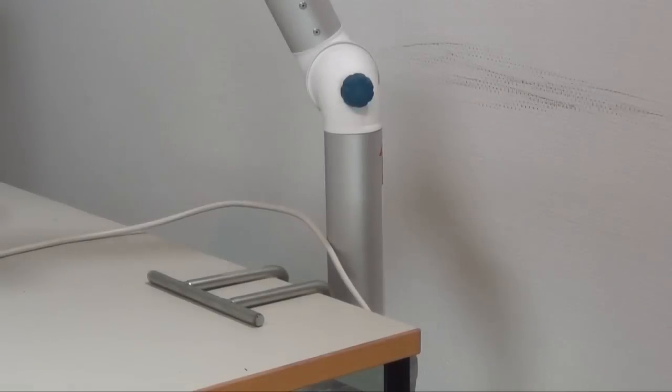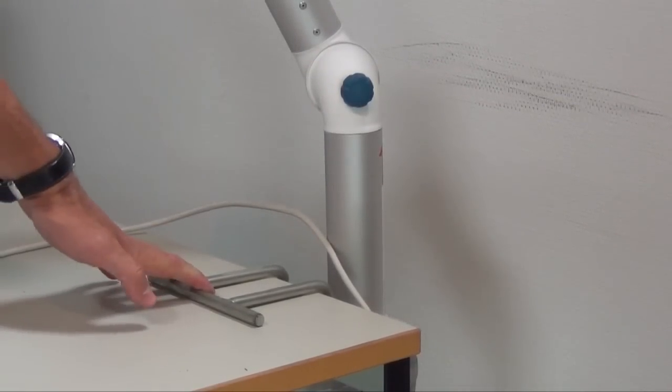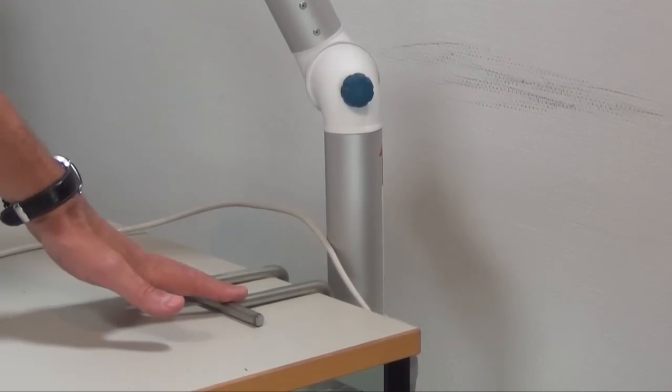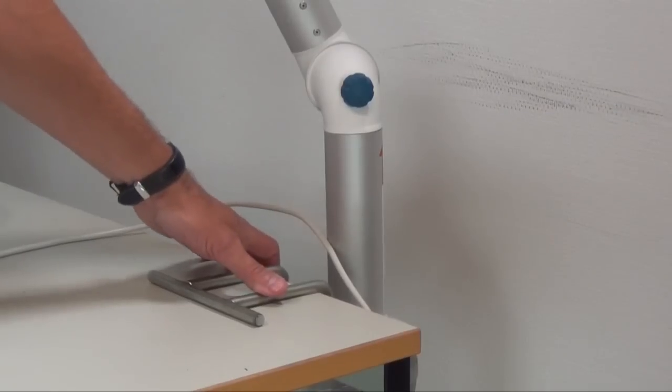You can install the arm in different ways. One way for example is on a table like this. This is an accessory that you can buy and install the arm close to the table like this.